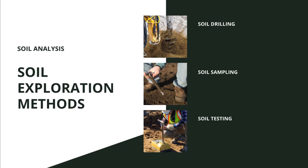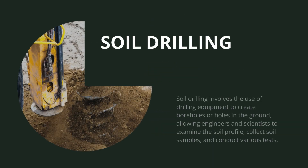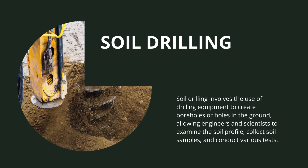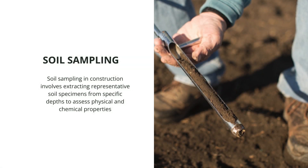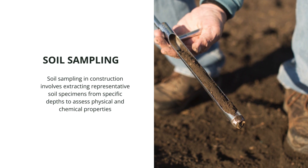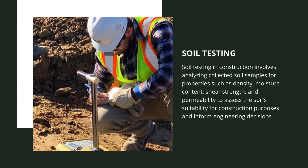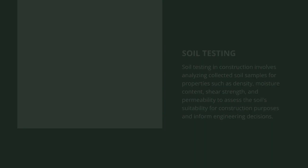The three major steps involved in testing a soil sample are soil drilling, soil sampling, and soil testing. Based on how these stages are performed together or separately, we have different methods of soil exploration. Soil drilling involves the use of drilling equipment to create boreholes in the ground, allowing engineers and scientists to examine the soil profile, collect soil samples, and conduct various tests. Soil sampling involves extracting representative soil specimens from specific depths to assess physical and chemical properties, informing foundation design and construction methodologies. Soil testing involves analyzing collected samples for properties such as density, moisture content, shear strength, and permeability to assess soil suitability for construction and inform engineering decisions. These methods can be performed together, separately, or simultaneously, and based on this we have different methods of soil exploration.